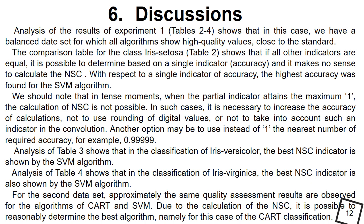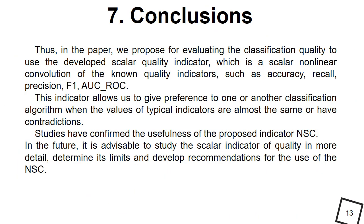Thus, in the paper we propose for evaluating the classification quality the use of the developed scalar quality indicator, which is a scalar nonlinear convolution of the known quality indicators such as accuracy, recall, precision and others. These indicators allow us to give preference to one or other classification algorithm when the value of typical indicators are almost the same or have contradictions.